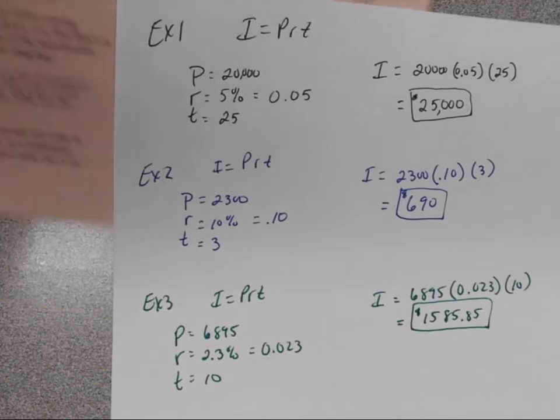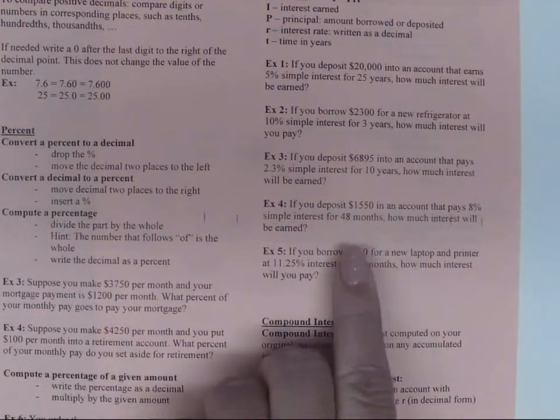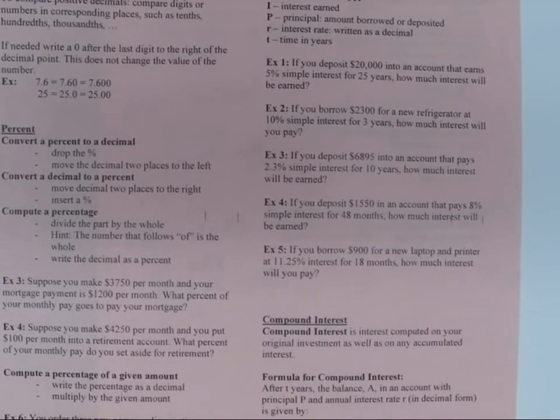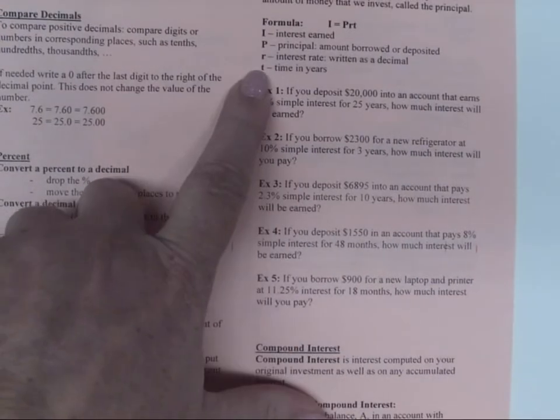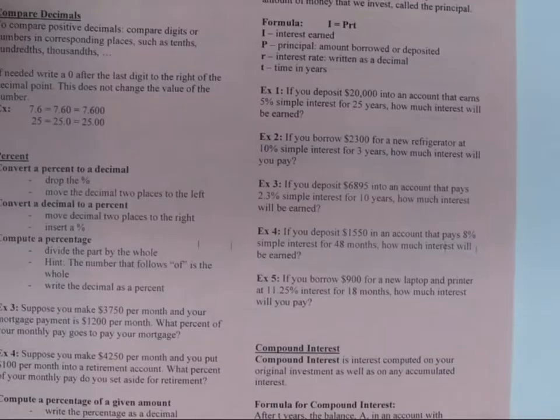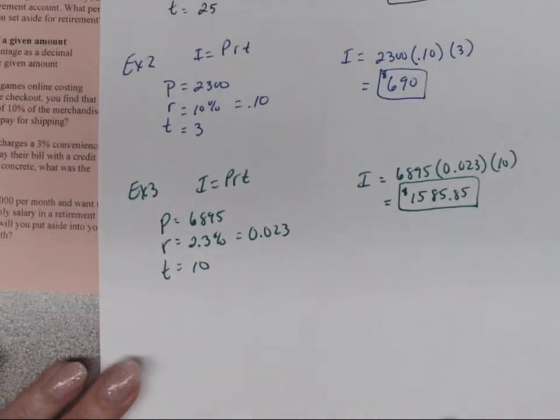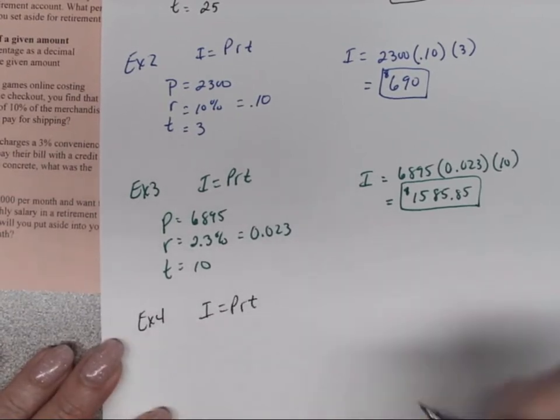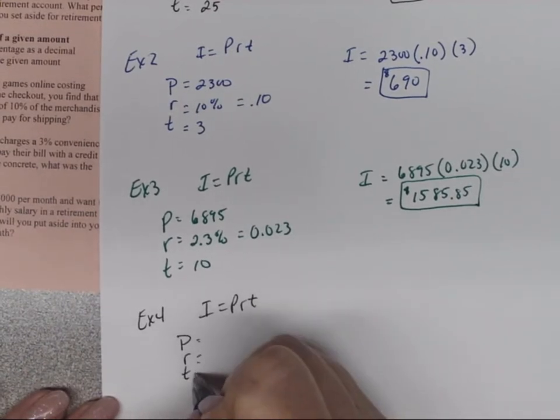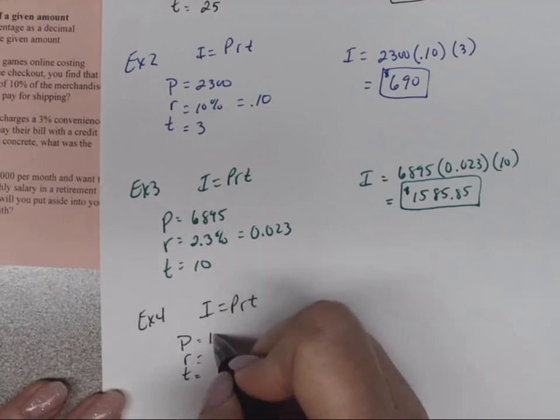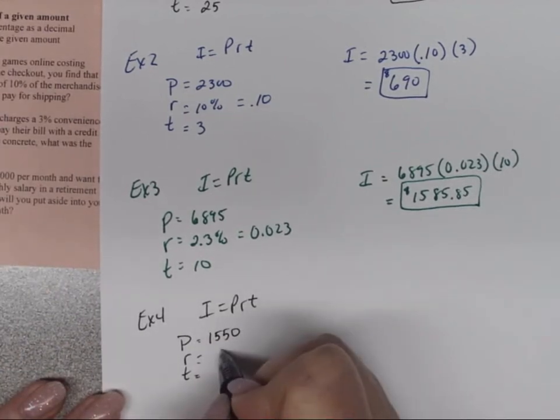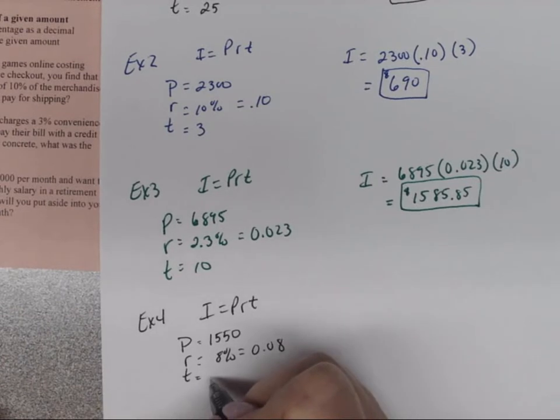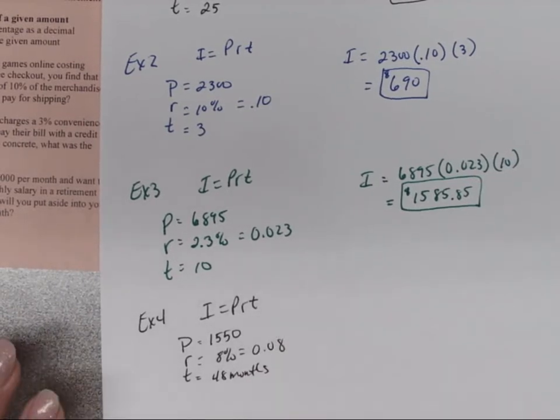Alright, example four says that if you deposit $1,550 in an account that pays 8% simple interest for 48 months, how much interest will be earned? Now remember, I told you that the time has to be in years, so we're going to have to change our 48 months. Alright, so here we go. Example four, we're still looking at I is equal to PRT, but we need to know what the P, the R, and the T are. So the principal that we deposited was $1,550, the account pays 8%, which we know will be 0.08, and the T was 48 months.